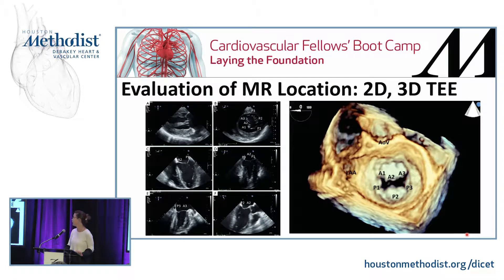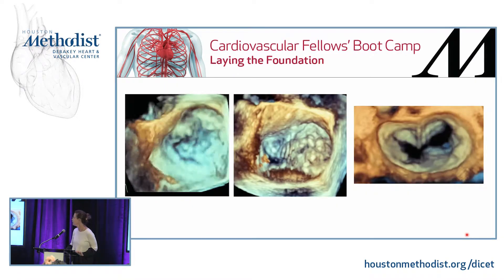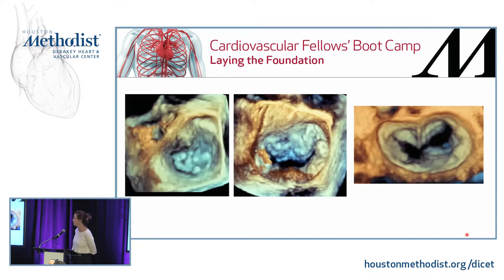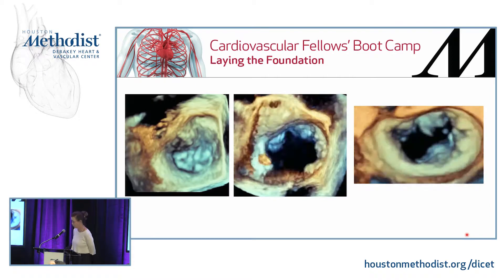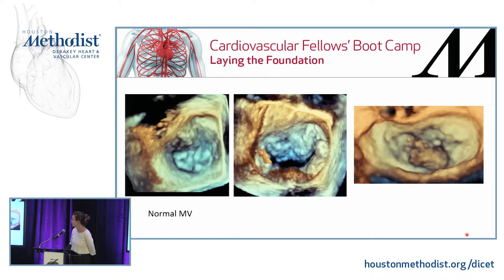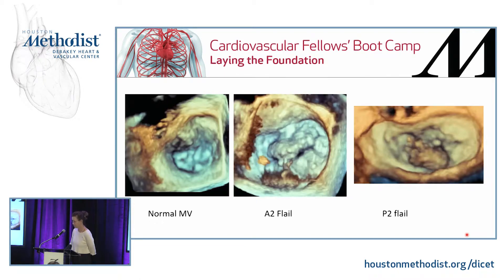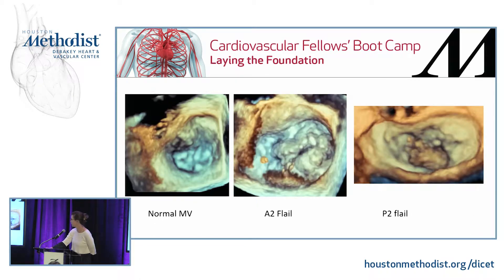For evaluation of MR location, you can use either 2D or 3D TEE in the operating room, and you can see exactly the relationship between the mitral valve and the aortic valve and the aorto-mitral curtain. First is a normal mitral valve, second is an A2 flail, and third is a P2 flail. Let me see if I can play it — actually, you can see it pretty well; it stopped at the right place.